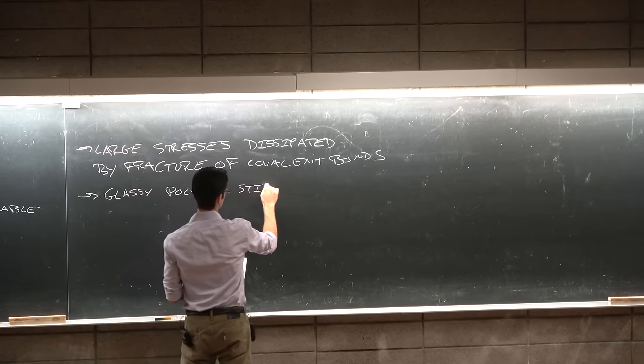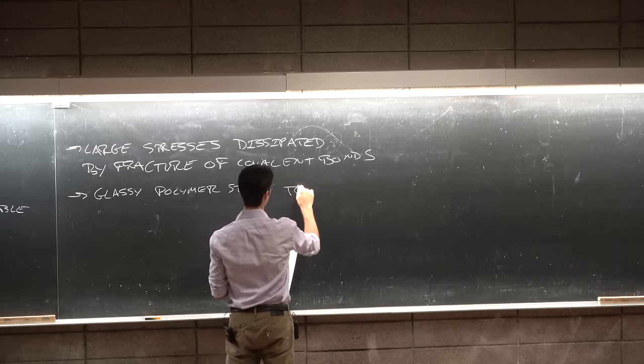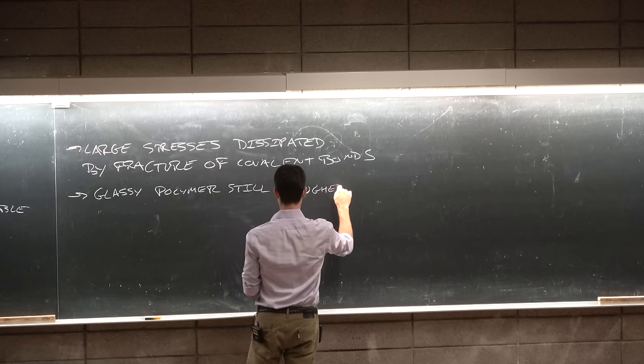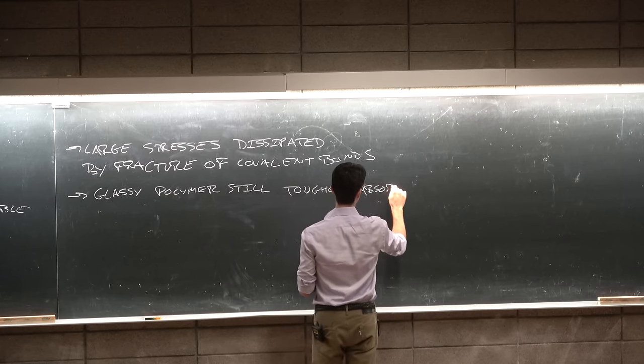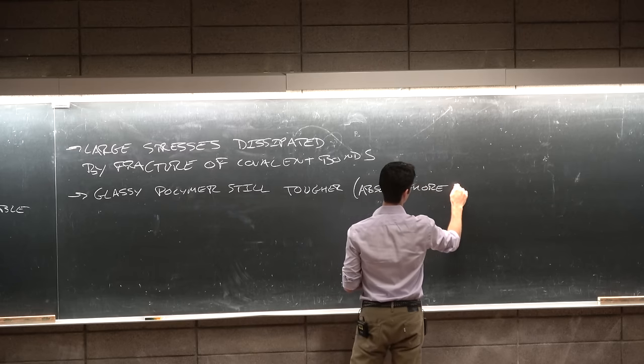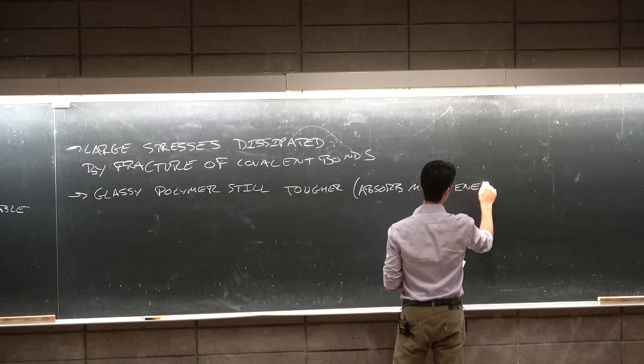The toughness is the total energy density that is absorbed by a polymer sample or in a sample of any material prior to fracture. So, the glassy polymer, glassy polymers are still tougher. That is, they absorb more energy, strain energy,